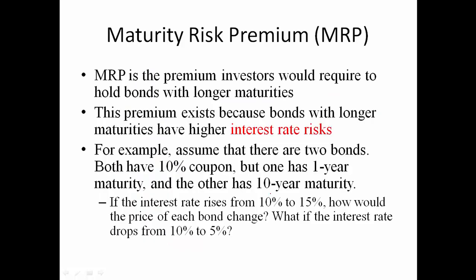Maturity risk premium is the premium investors require to hold bonds with longer maturities, because longer-maturity bonds have higher interest rate risk. For example, assume two bonds both with 10% coupons — one with one-year maturity and one with 10-year maturity. If the interest rate rises from 10% to 15%, or drops from 10% to 5%, how would the price of each bond change?